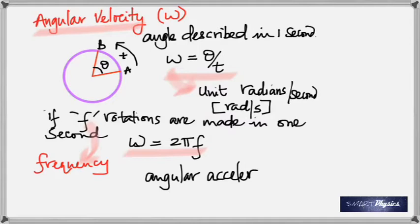If an object moves in a circle with constant velocity, does it have any acceleration? Yes — centripetal acceleration, directed towards the center. But if you keep increasing the speed — starting slowly and speeding up — you get an additional acceleration called angular acceleration, also known as tangential acceleration. So centripetal acceleration is always present, but tangential acceleration only appears when the speed changes.